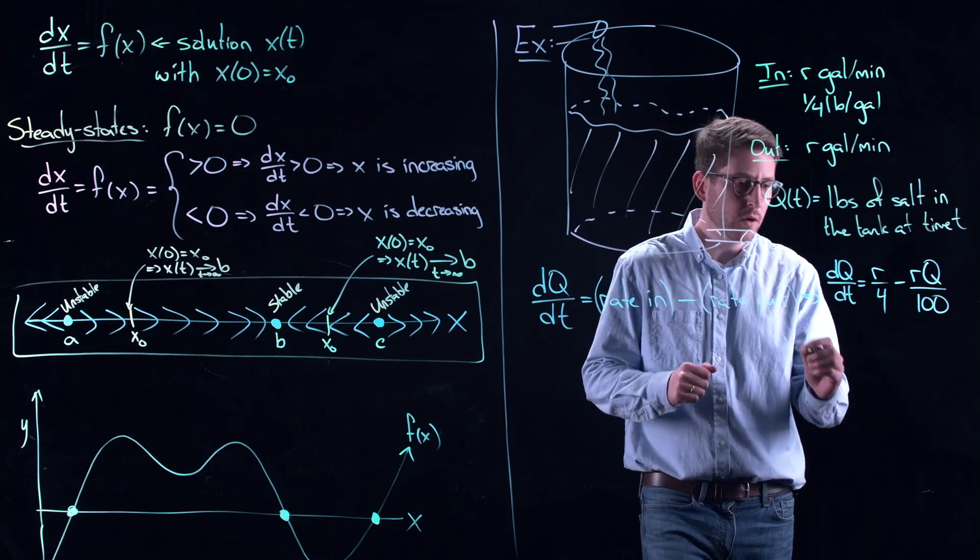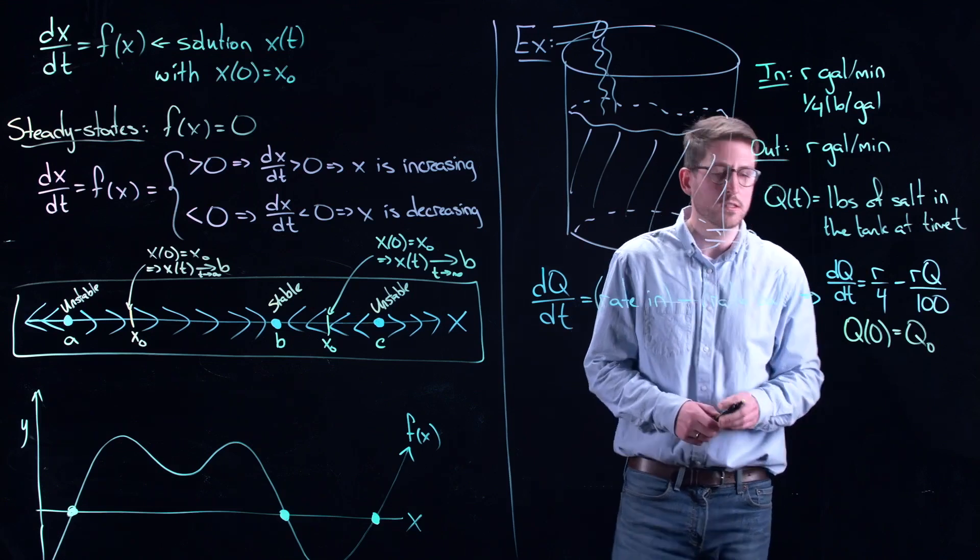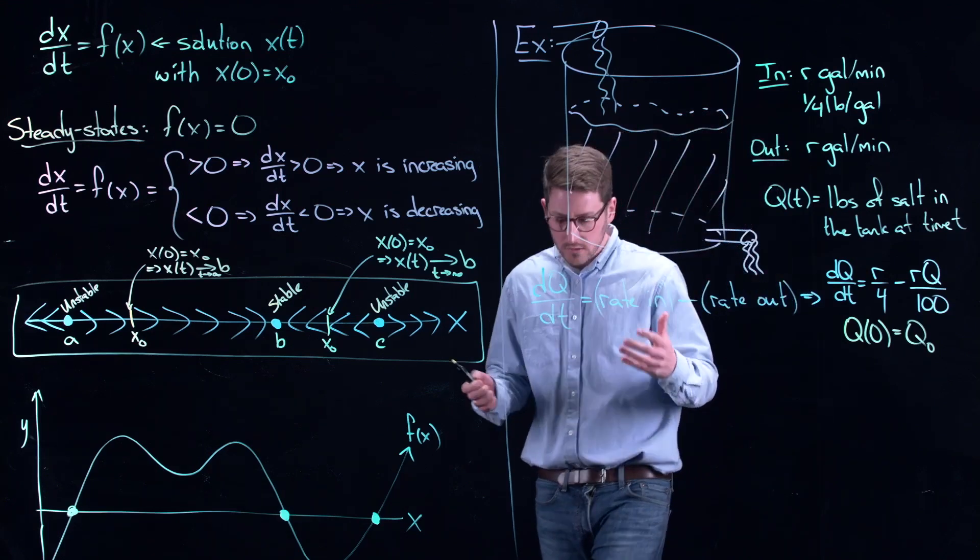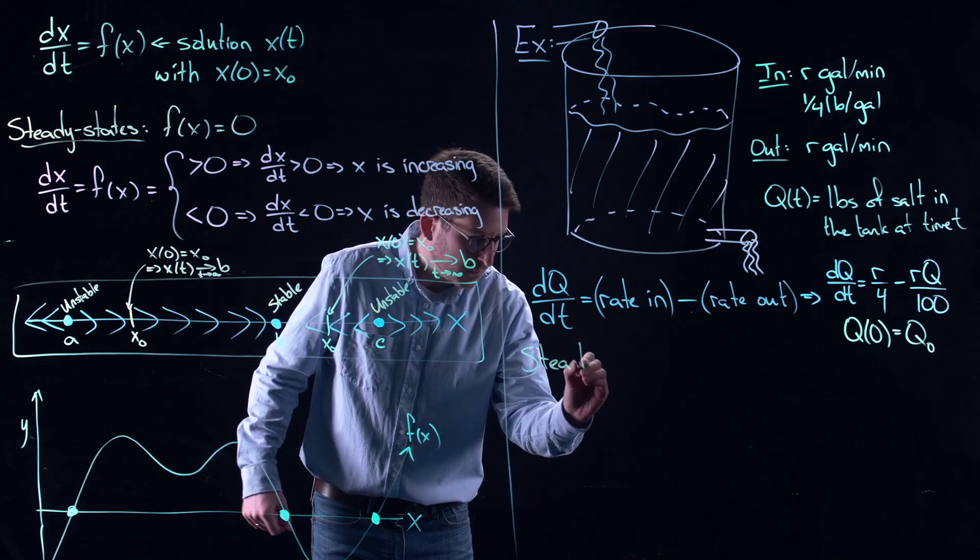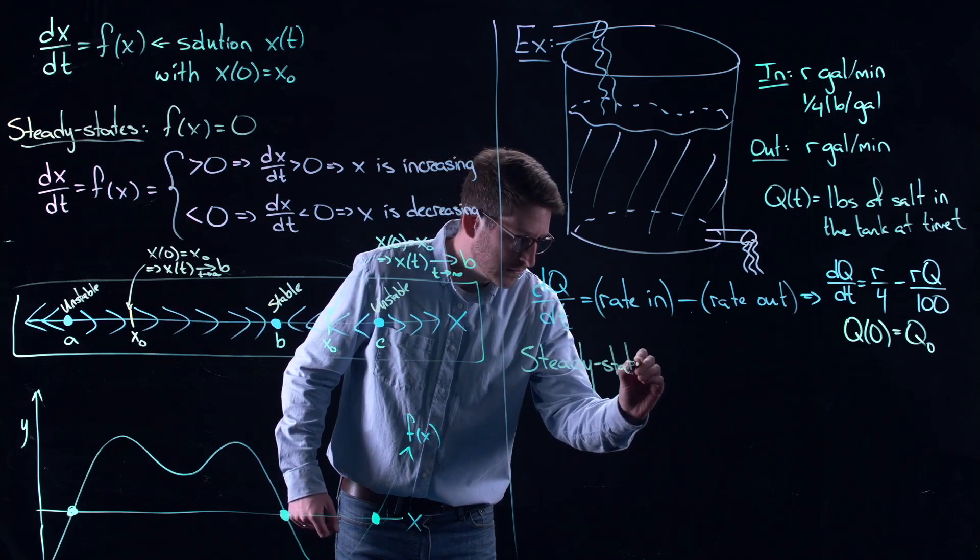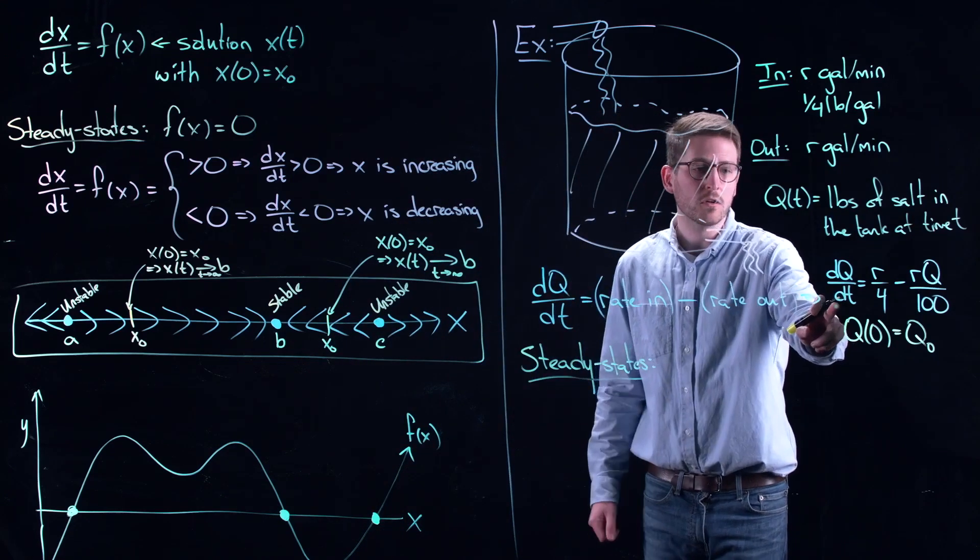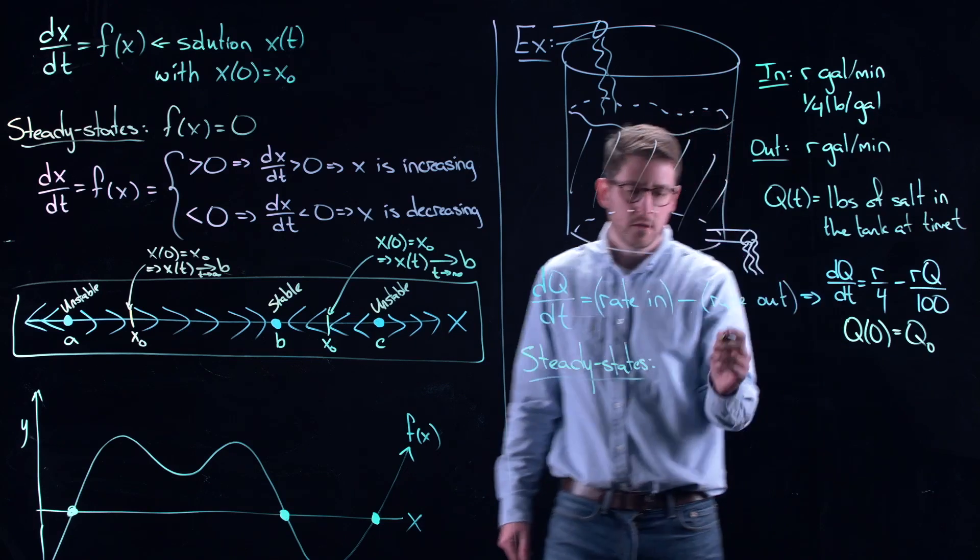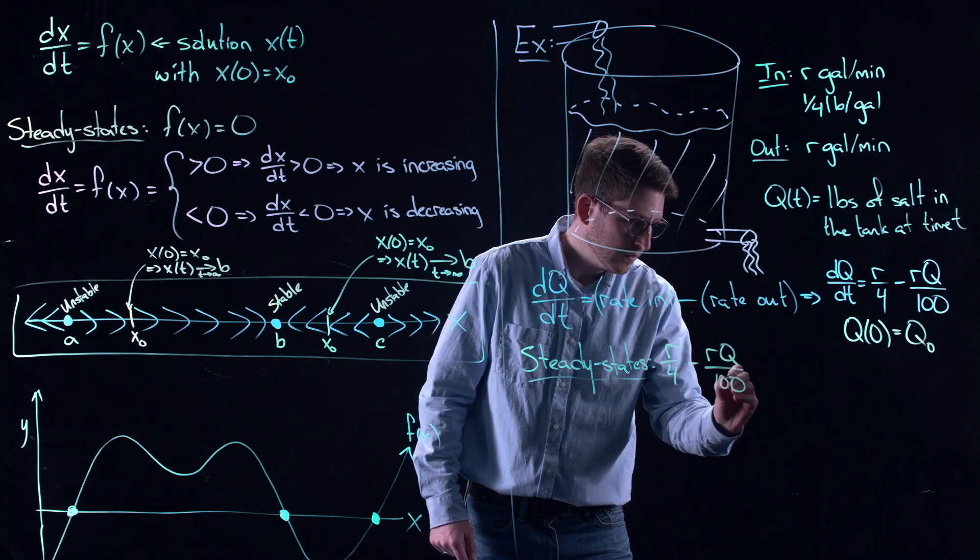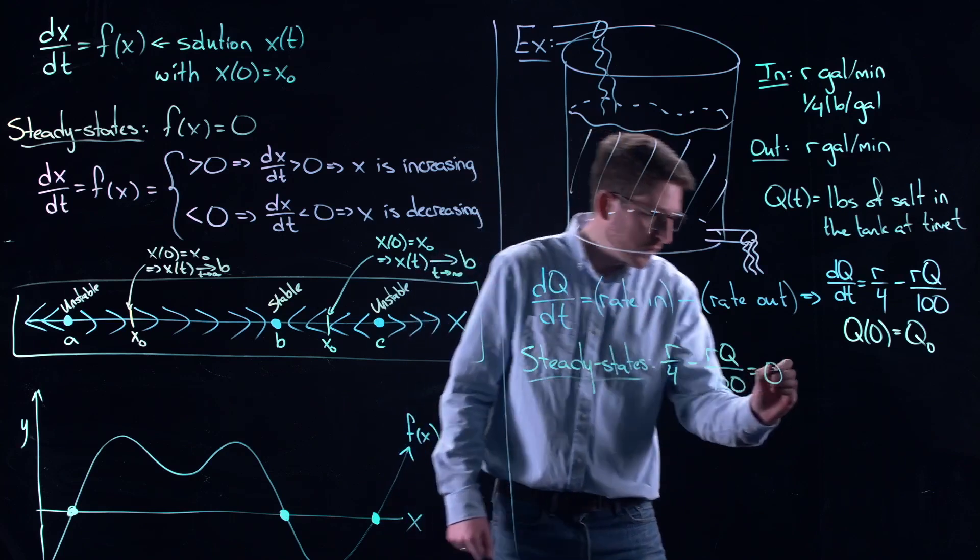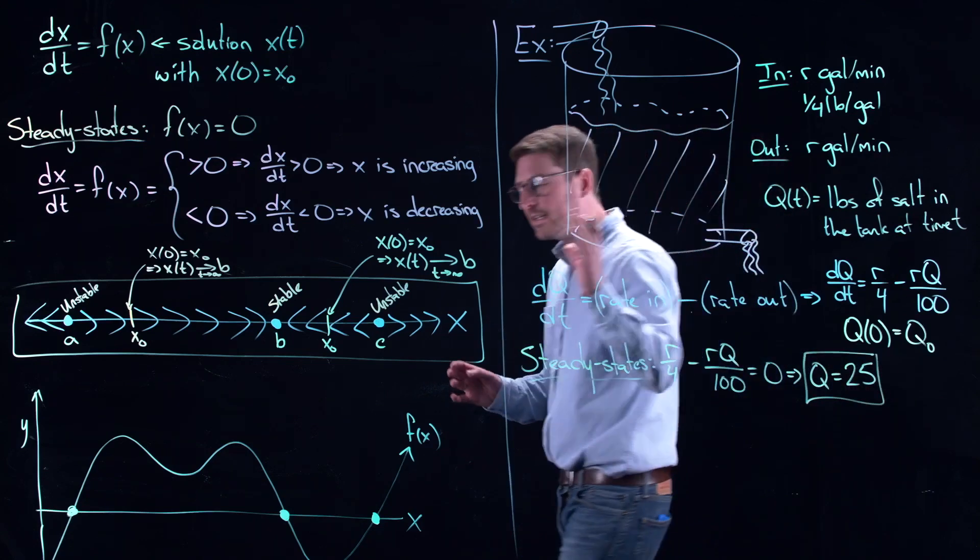So now we have this equation. We also will have an initial condition. We can ask ourselves how much salt was in there. And then we can start analyzing this differential equation. So the first thing, like I just did on this side of the board, I can start looking at steady states. Well, steady states are when the value of q is not changing in time. So that is when r over 4 minus rq over 100 is equal to 0, which gives me q is equal to 25. There is only one steady state here.